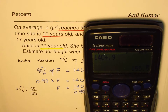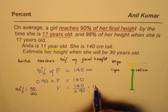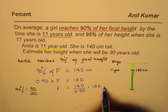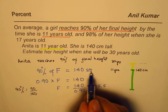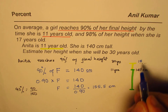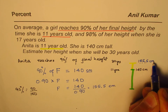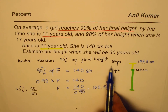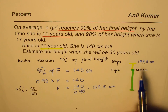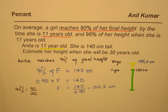Let's check. In decimals it is 155.5. So we get a height of 155.5 centimeters. Approximately we could write 156, but I'll prefer to write 155.5 centimeters. So at the age of 30 years she is going to grow from 140 centimeters to 155.5 centimeters. That is how you can solve the question. I hope that helps. Thank you and all the best.